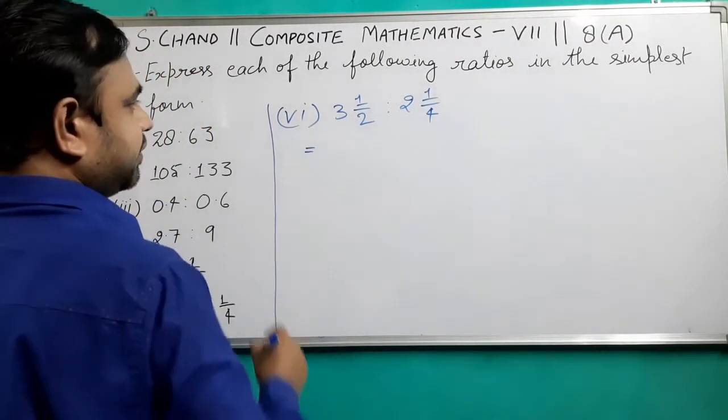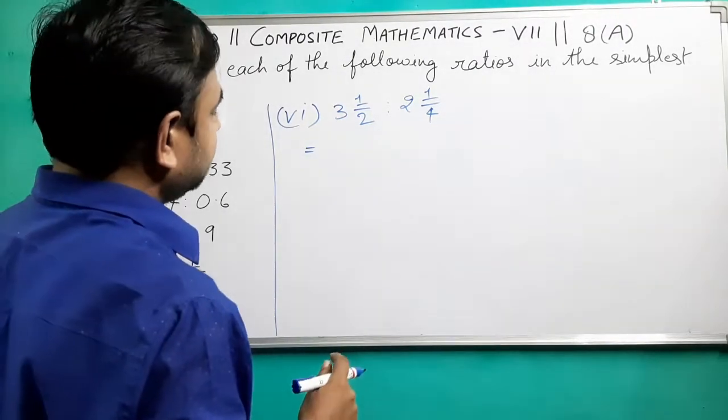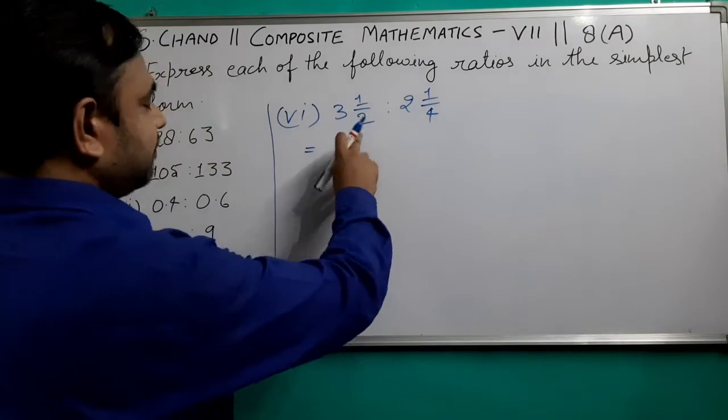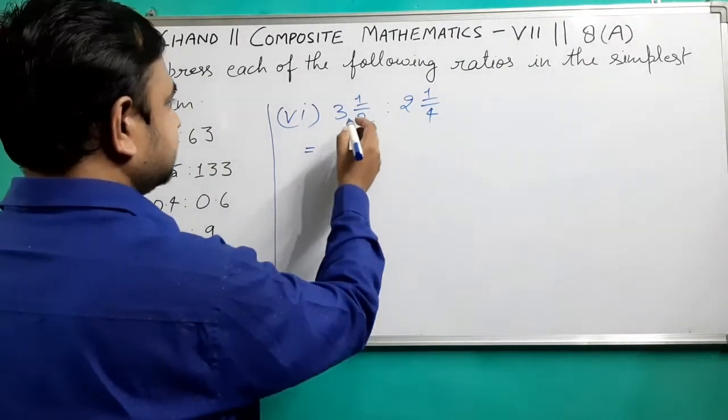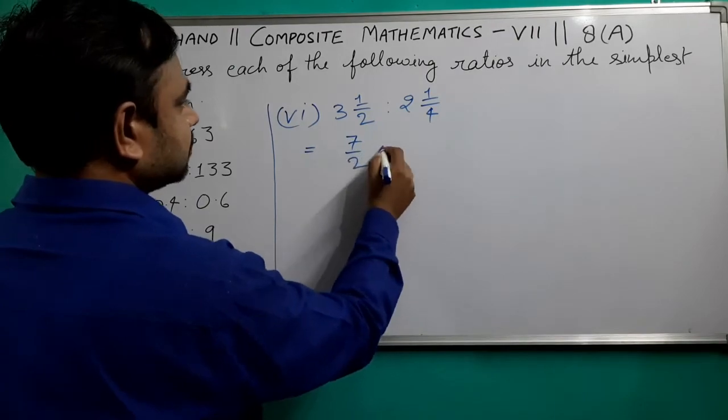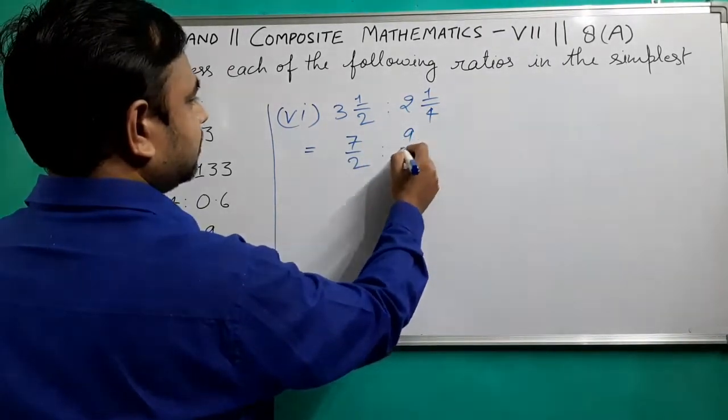And now we are going to write it in, sorry, it is in mixed number, so we will have to write it in proper fraction first. 3 times 2 plus 1, 7 upon 2. 2 times 4 plus 1, 9 upon 4.